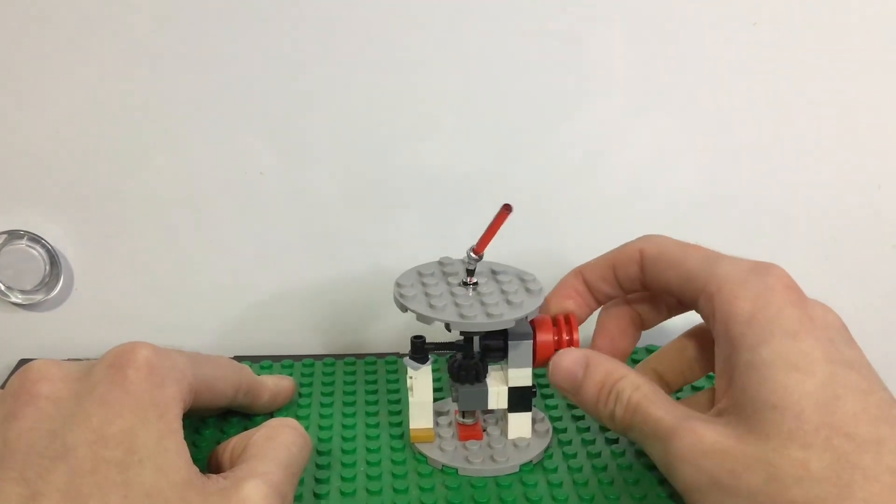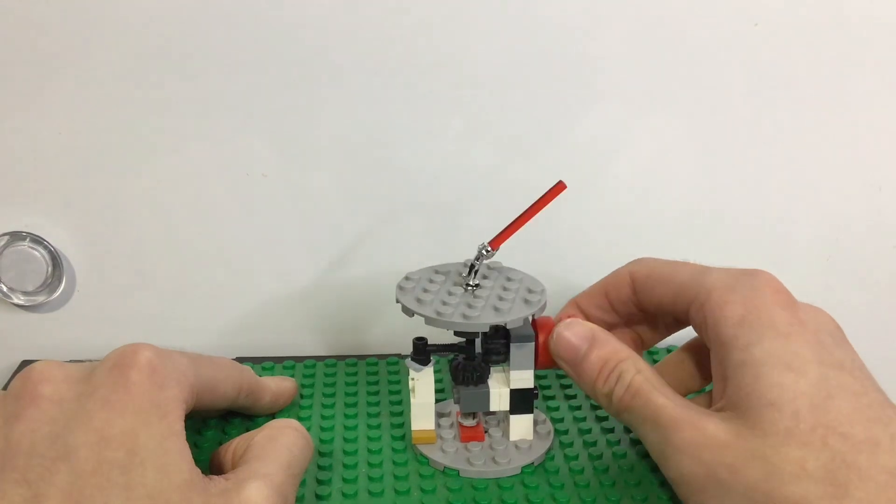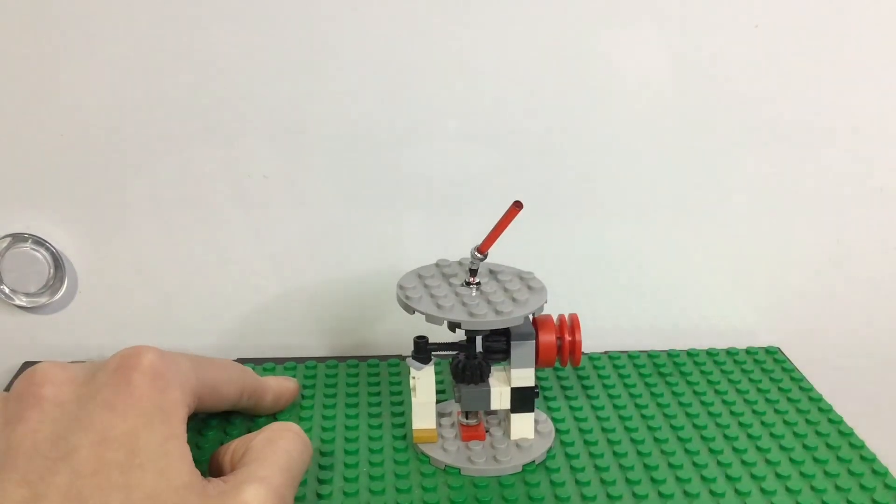You're actually meant to turn it the other way, but I realized it's more accurate if you turn it this way where the spike on the bottom, which should be at the top, is facing down.